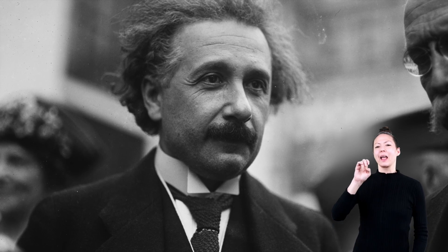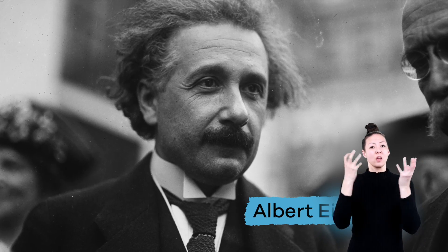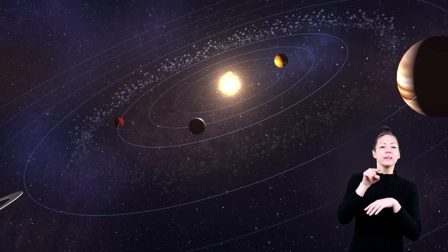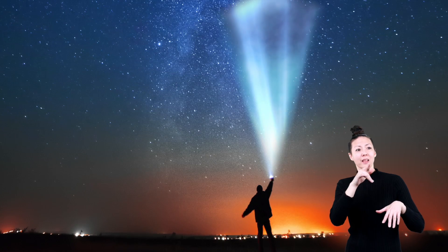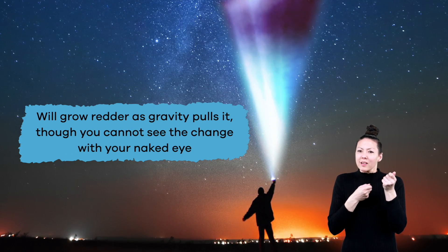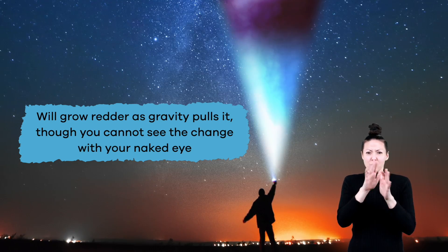Another famous scientist, Albert Einstein, discovered that gravity not only pulls on mass, like a planet, but also on light. A flashlight shined into the air will grow redder as gravity pulls it, though you cannot see the change with your naked eye.